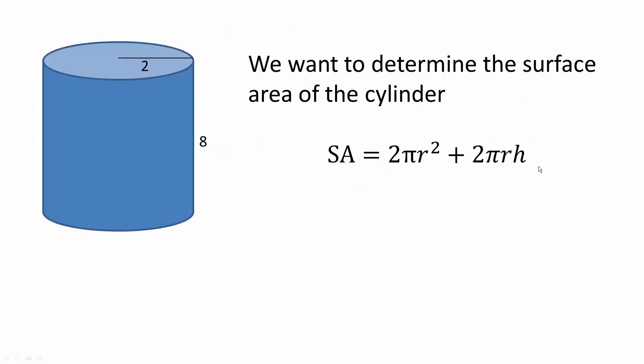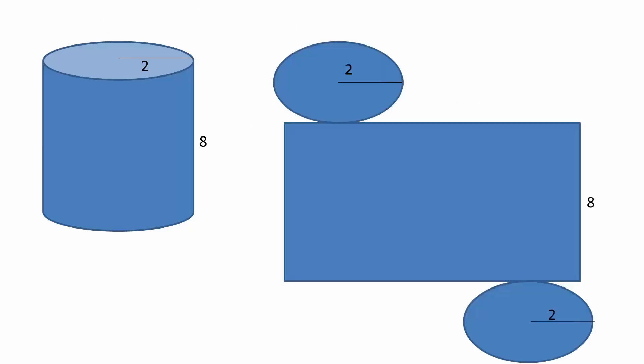We want to derive this formula right here, this is the surface area for a cylinder. Like I said, the lateral surface is kind of like the soup label, and if you have a can of soup you can remove the label.